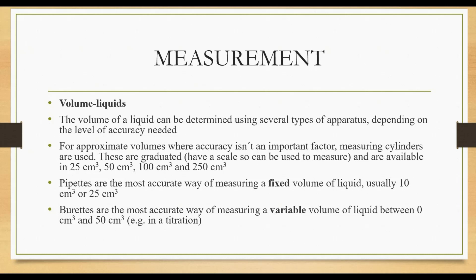Pipettes are the most accurate way of measuring a fixed volume of liquid, usually 10 cm³ or 25 cm³. Burettes are the most accurate way of measuring a variable volume of liquid between 0 cm³ and 50 cm³. For example, in titration, we use burettes. To summarize: a beaker is used to estimate liquid volume; measuring cylinders measure up to 0.1 cm³ and are more accurate than beakers; pipettes measure fixed volumes accurately — 10 cm³ or 25 cm³ — up to 0.1 cm³; and burettes measure variable volumes of liquid accurately, also up to 0.1 cm³.